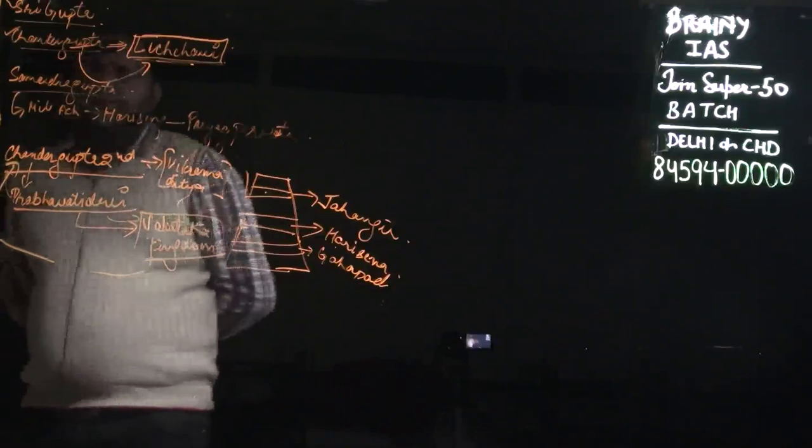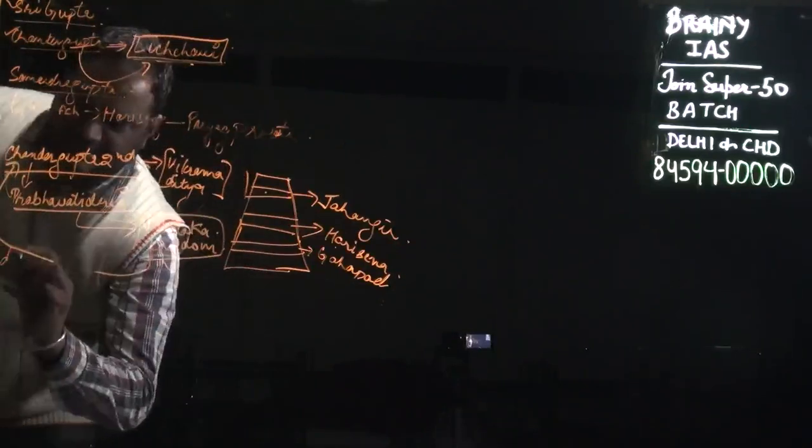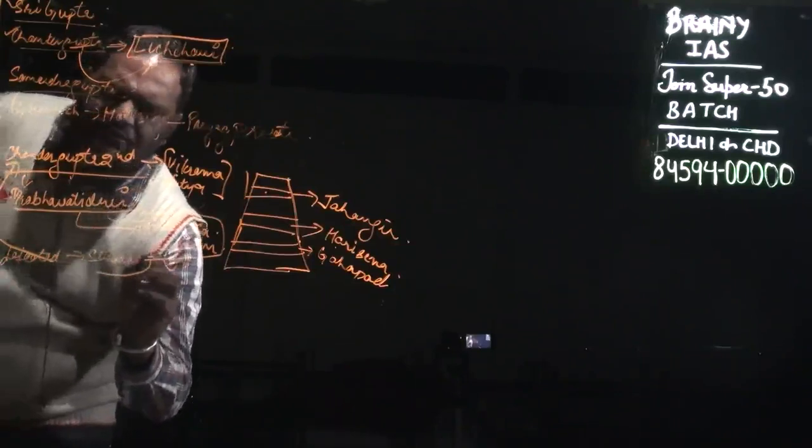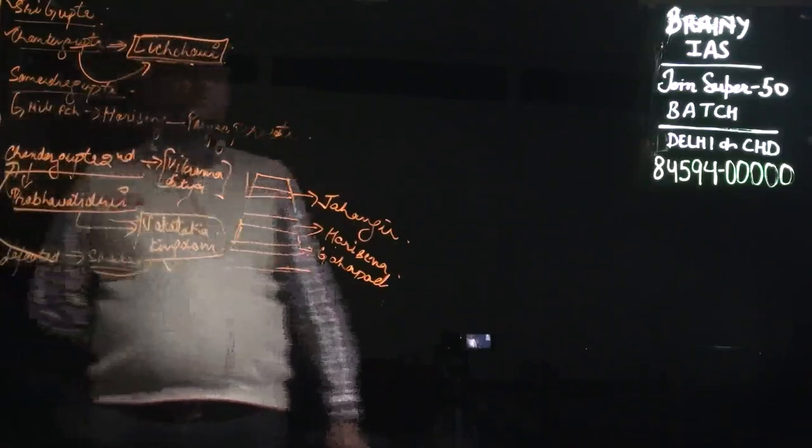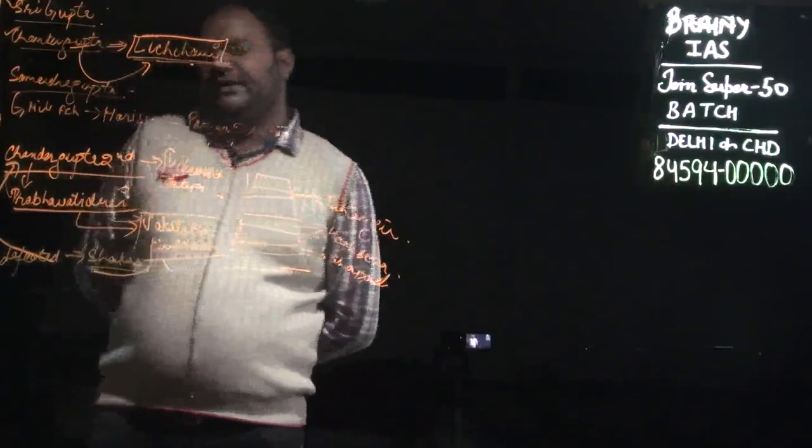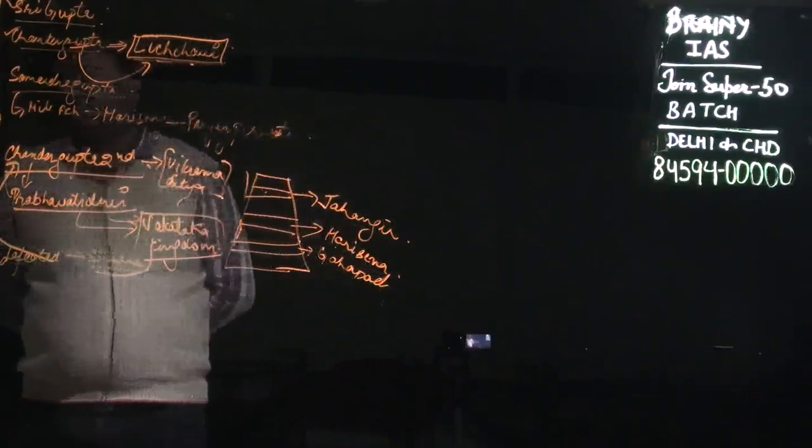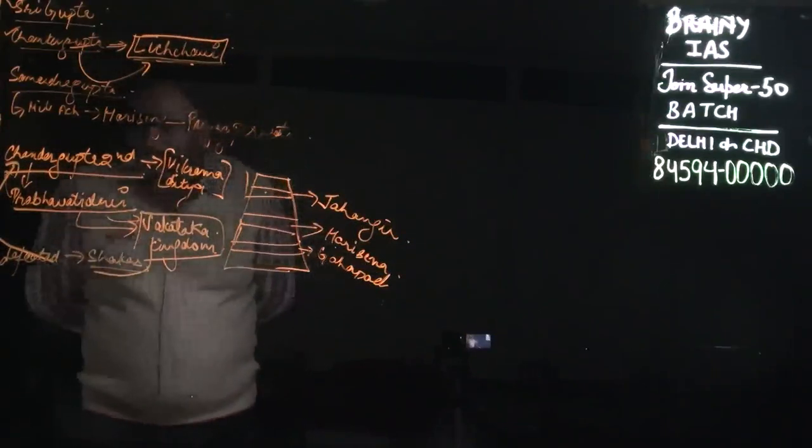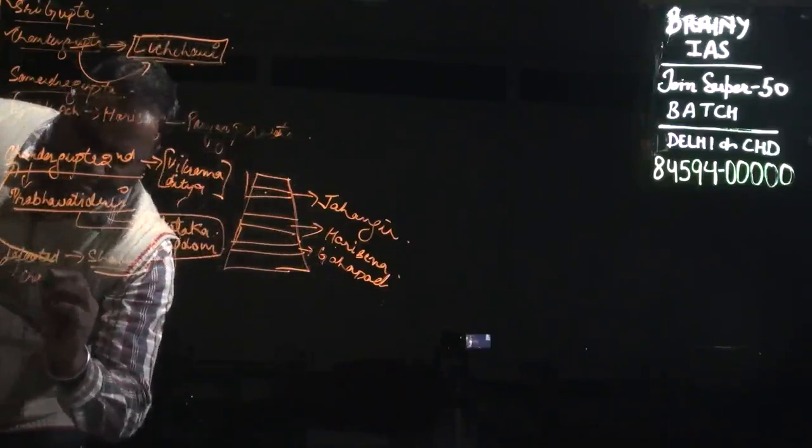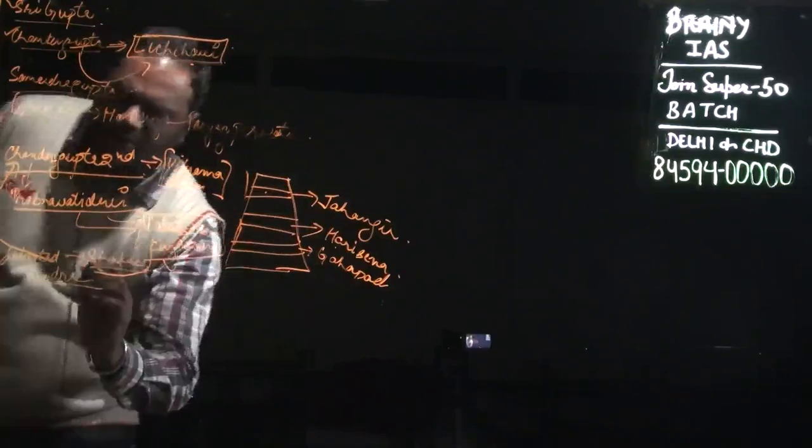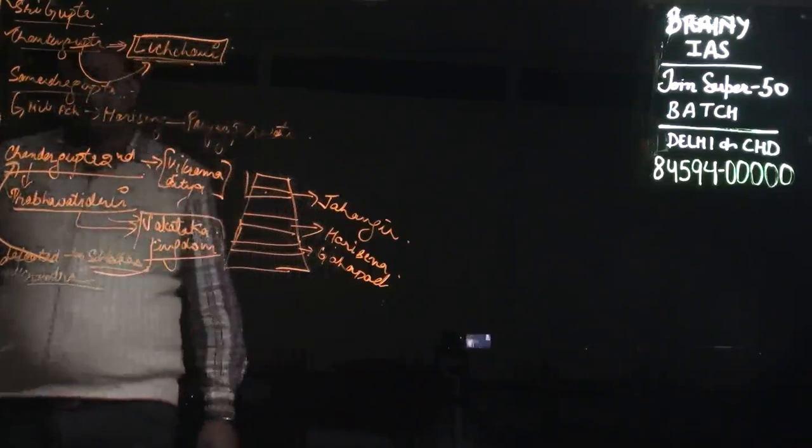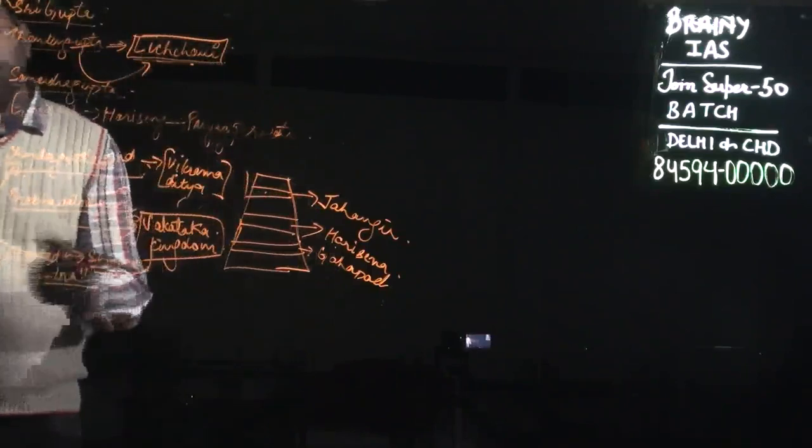Chandra Gupta II defeated the Shakas, the foreign ruling groups. This is mentioned in the Mehrauli Pillar, where Chandra Gupta is referred to as Chandra. He had nine ratnas in his court, among which two are important: Amar Singh and Kalidas.